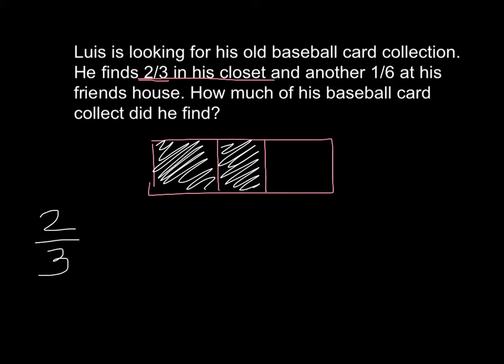Now I really want to be able to add my one-sixth that he found at his friend's house. However, I only have three separate sections here, and I cannot just add a sixth to that since I don't know exactly how much that's going to be. So what I want to do is start with my two-thirds and try to get a common denominator.